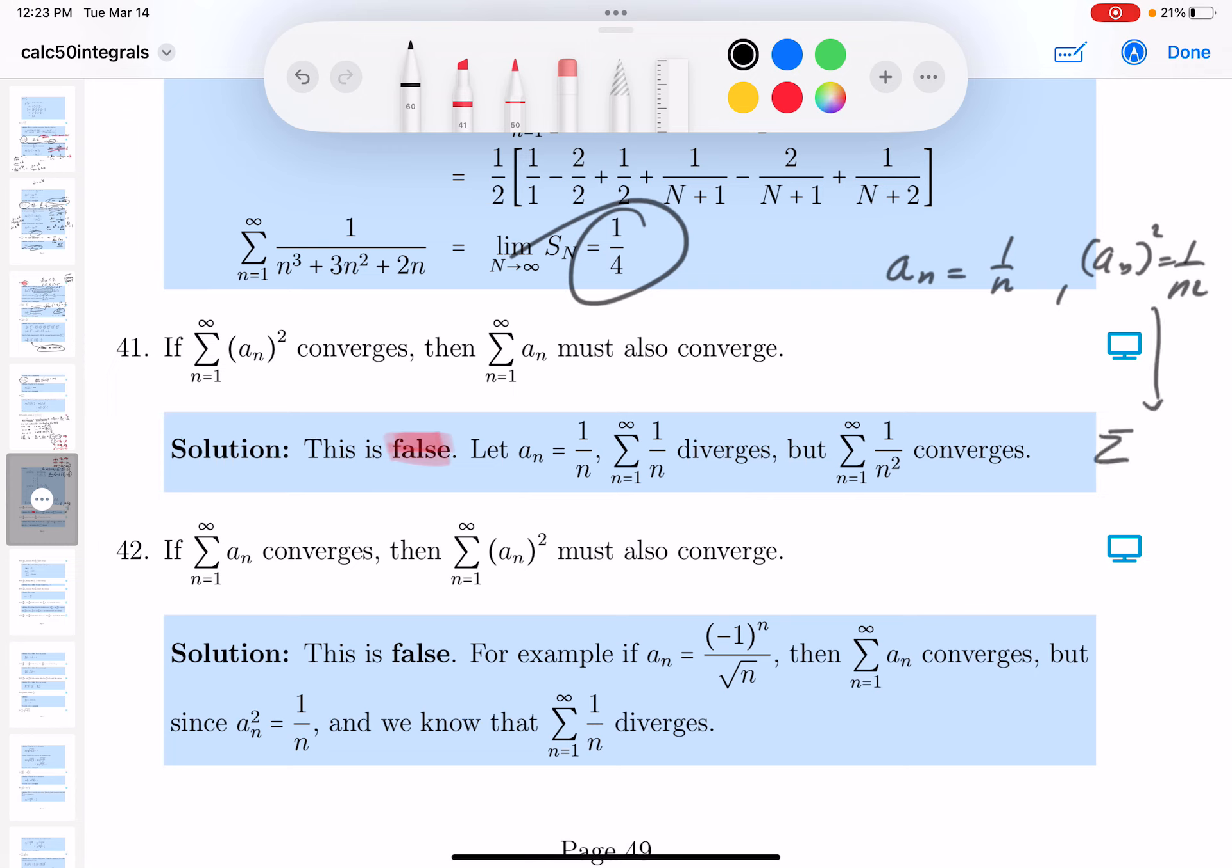This converges, by the way. This is a convergent p-series. This converges, but this doesn't. And this is a good counterexample. This diverges over here.